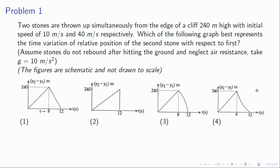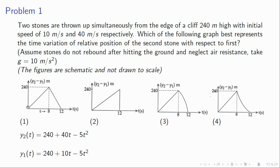This is problem one. It says two stones are thrown up from the edge of a cliff. The height is 240 meters, the initial speed is 10 meters per second and 4 meters per second. Which graph represents the variation of the relative position of the second stone with respect to the first — which graph represents y2 minus y1? You just write down the equation. For the second stone the initial position is 240, then you write ut minus half gt squared, so u is 40 and half g will be 5. For the first one it is thrown up with a speed of 10 meters per second, so u is 10, and again minus 5t squared. If you do y2 minus y1 you will just get 30t, so it is a straight line.